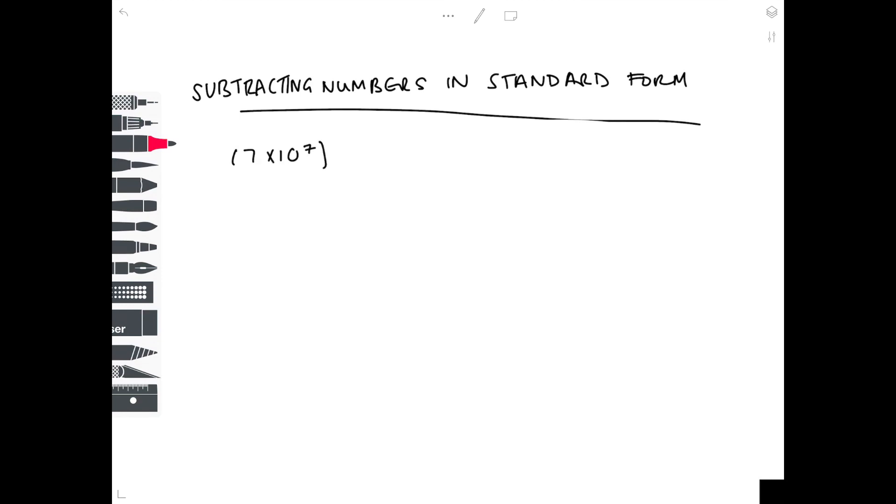Now we're going to look at subtracting numbers in standard form. It's a very similar method to the addition method, so make sure you're using the same method for both. We have 7 times 10 to the 7 minus 5 times 10 to the 5. I'm going to do method one first, where I choose the same power, and this time I'm going to make them both to the power of 5.